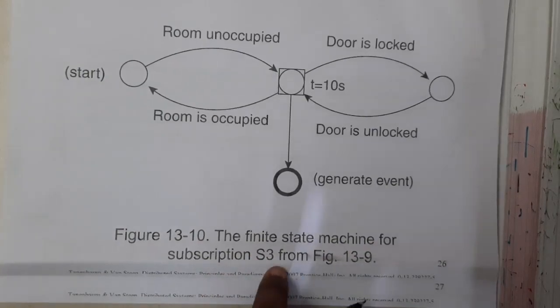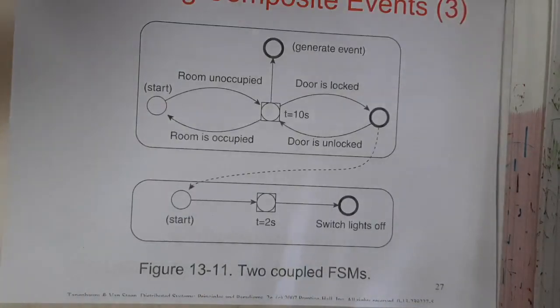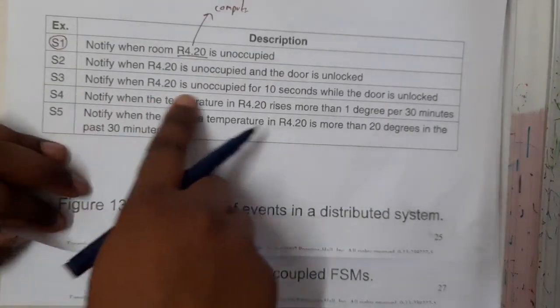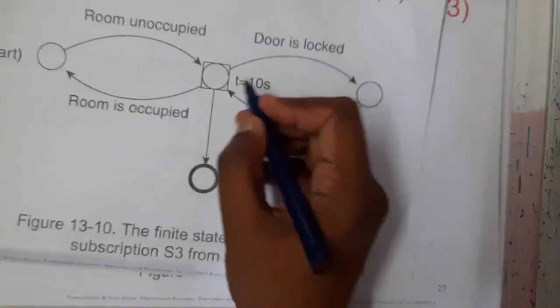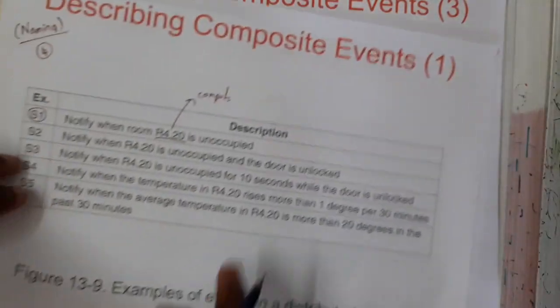So this is the finite state machine for subscription of S3. Basically here we drawn for S3, for 10 seconds it should not be on. For each and every one you can draw the diagram, guys.